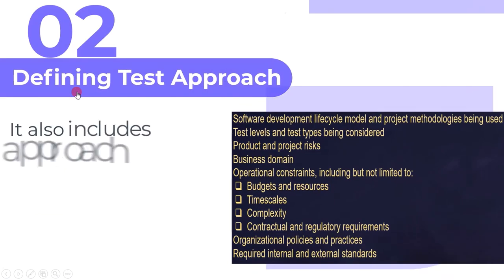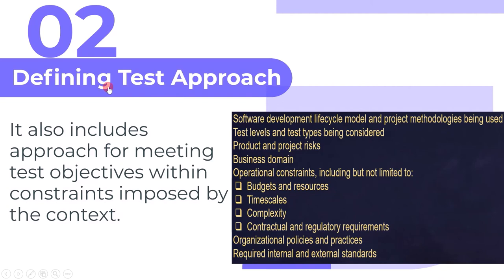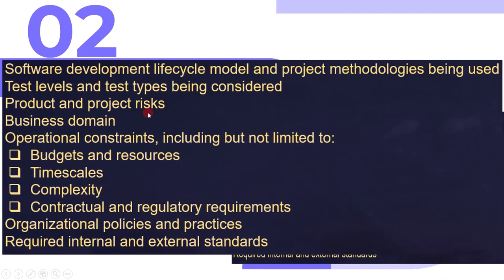The second main activity of test planning is defining test approach. It includes an approach for meeting test objectives within constraints imposed by the context. We saw previously that testing is context dependent. Testing depends on type of model used, type or level of testing performed,